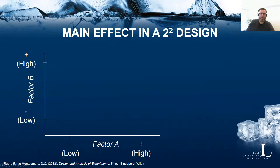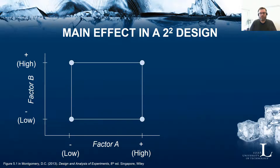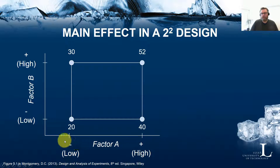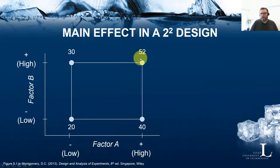Let's look a little bit closer at the estimation of a main effect. To visualize how this is calculated, we can view a square where we place the response values in each corner. On the x-axis we have factor A at its low and high level, and on the y-axis we have factor B at its low versus high level. We can see the response values in the different treatment combinations in the design.